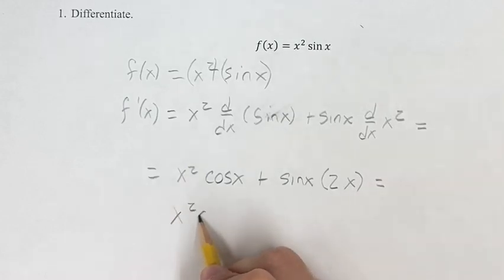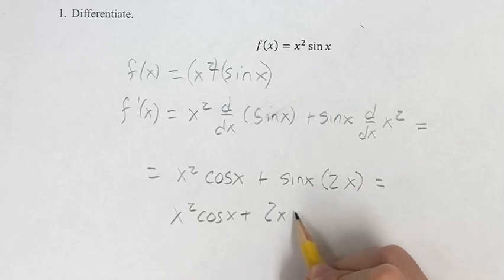So your final answer is going to be x squared cosine x plus 2x sin x.